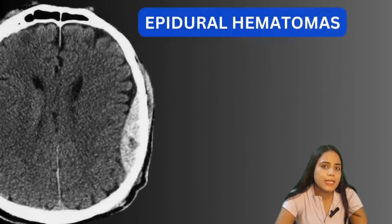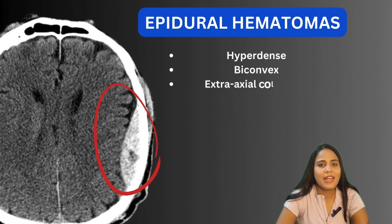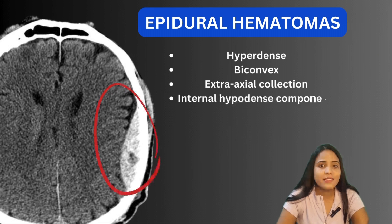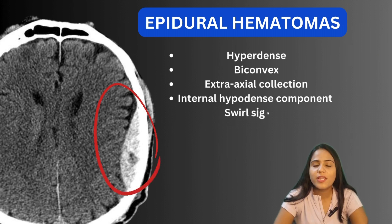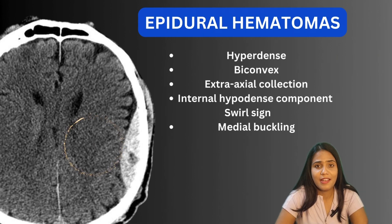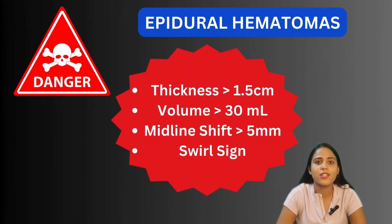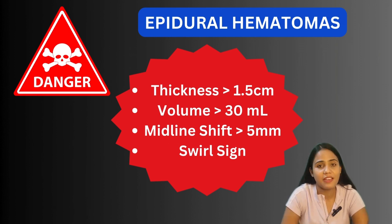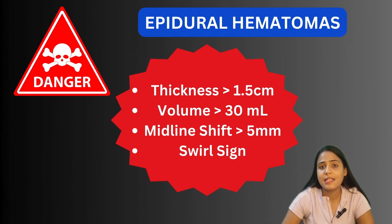On imaging, this axial non-contrast CT demonstrates a biconvex hyperdense hematoma in the left parietal region with a subgaleal hematoma overlying the EDH. A heterogeneous hypo-intensity within the blood demonstrates fresh unclotted blood having a lower Hounsfield value — this typical sign is known as the Swirl sign. The EDH pushes the cortex immediately, causing buckling of the gray-white interface. Important danger signs: thickness more than 1.5 cm, volume more than 30 mL, and presence of the Swirl sign — these may require surgical intervention.